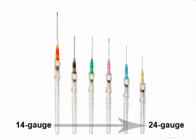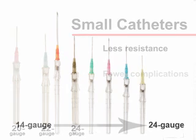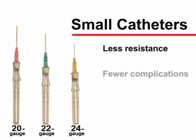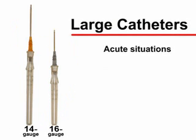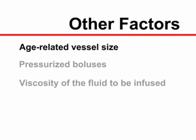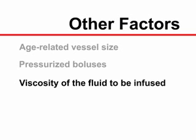The size of the catheter selected will depend on the clinical situation. The smallest effective catheter should be used, as small catheters allow for less resistance to blood flow around the cannula and are associated with fewer complications. Large catheters, such as 14 and 16 gauge, are used in acute situations for fluid resuscitation — for example, in managing hypovolemia in a trauma patient or in a patient with severe dehydration. Other factors influencing catheter size include age-related vessel size, the need for pressurized boluses for contrast or medication administration, and the viscosity of the fluid to be infused.